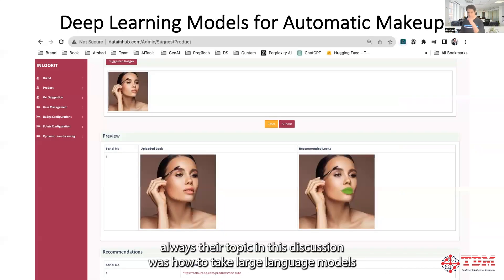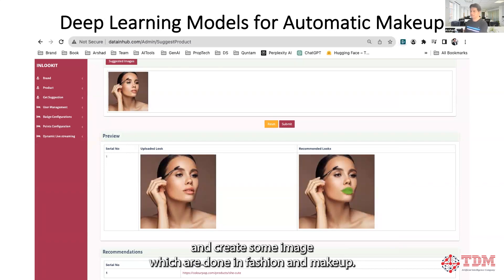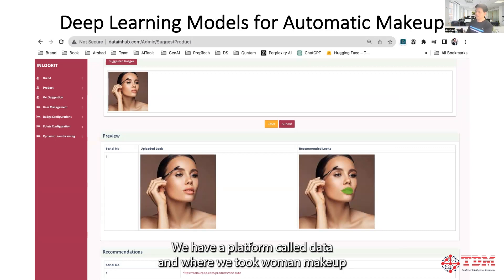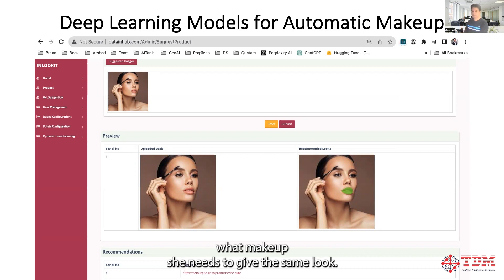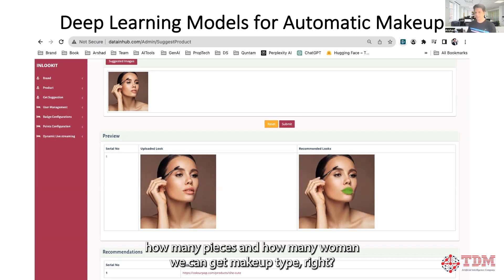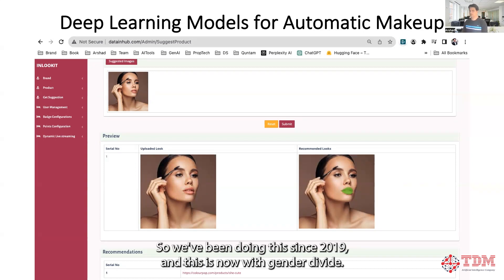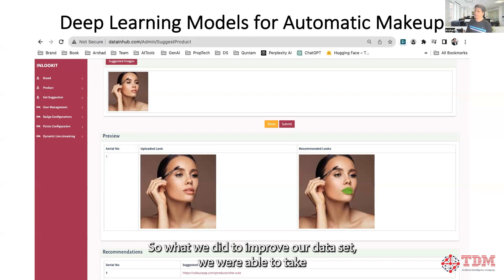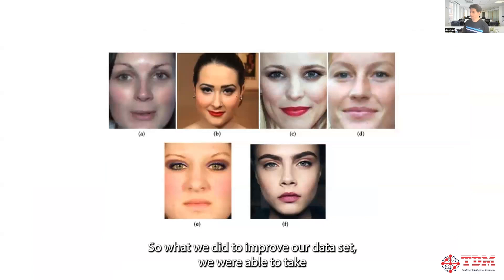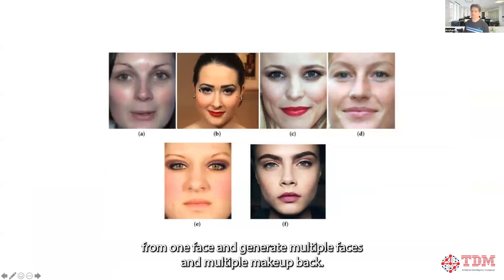Now our original topic was how to take large language models and create images, which we have done in fashion and makeup. We have a platform called DataIn where we took women's faces with certain makeup and we are able to predict what makeup she needs to achieve the same look. The challenge through this process was how many faces and makeup types we can get. We've been doing this since 2019, and with Generative AI it has revolutionized the whole thing for us.